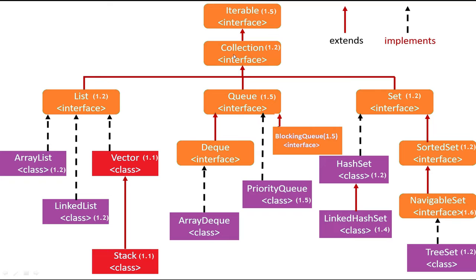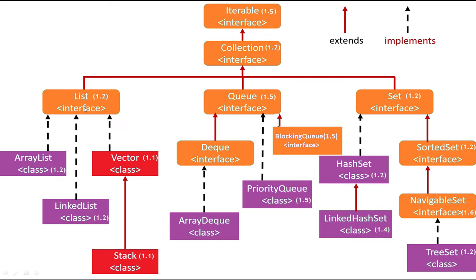Inside Collection, we have three child interfaces: List, Queue, and Set. Let's look at the first part. My requirement is: I want to store elements, and I have two requirements. First, it should preserve insertion order. Second, it should allow null values and duplicate values. If I want to store null, duplicate values, and it should follow insertion order, then I'll go with the List interface.